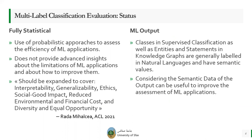I should recall the saying of Rada Mihalcea from the ACL 2021 conference. She said that ML classification evaluation algorithms should be expanded to cover interpretability, generalizability, ethics, social good impact, reduced environmental and financial cost, and diversity and equal opportunities. In this context, classes in supervised classification, as well as entities and statements in knowledge graphs, are generally labeled in natural languages and have semantic values. Considering the semantic data of the output can be useful to improve the assessment of machine learning applications.